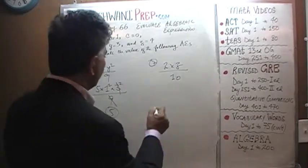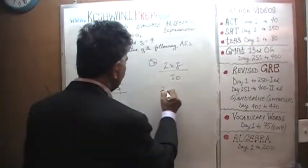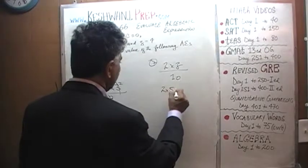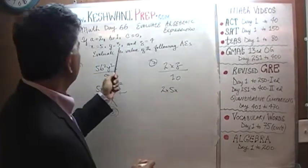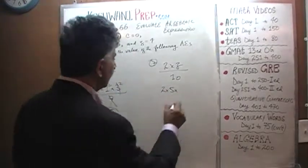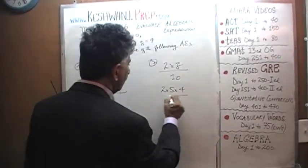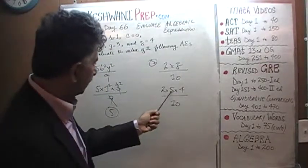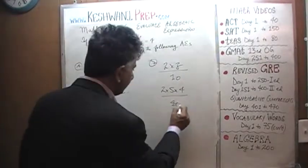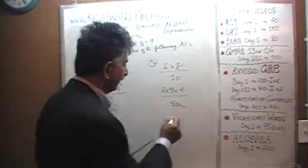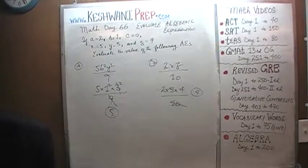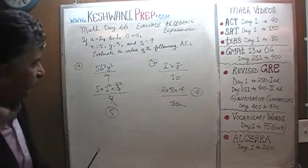Number 7: 2xz over 10. 2 times x which is 5, times z which is 4, over 10. We see 2 times 5 equals 10, which cancels the denominator. The answer is 4. These should go very, very fast.